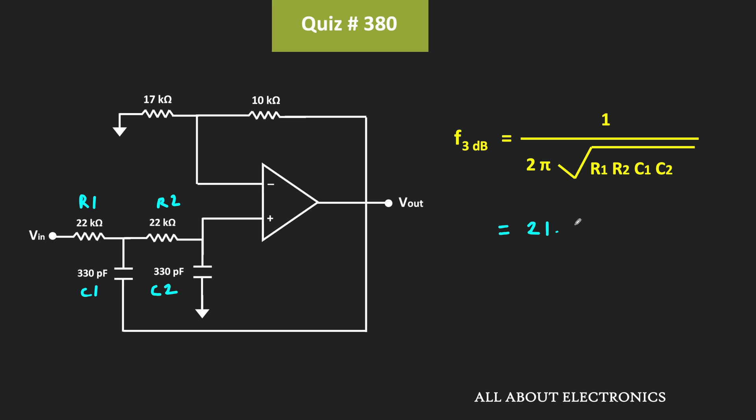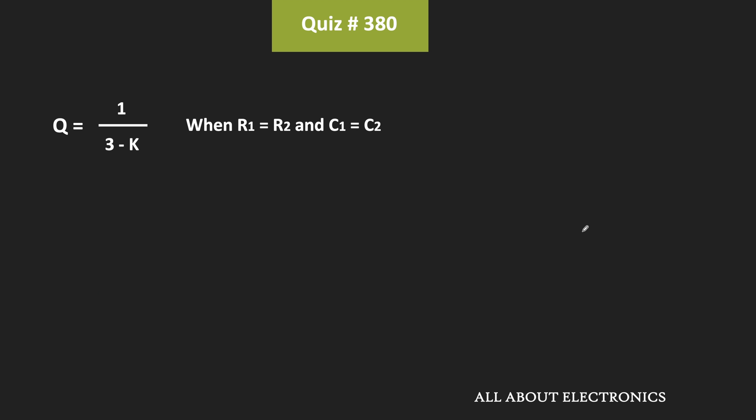Now, in this Sallen-Key filter topology, when R1 equals R2 and C1 equals C2, the Q factor can be given as 1 divided by (3 - K), where K is the passband gain of this filter topology. We will also get the same gain at DC.